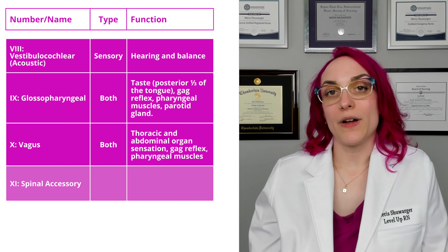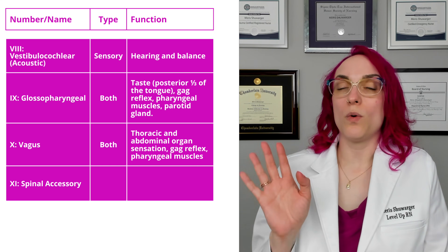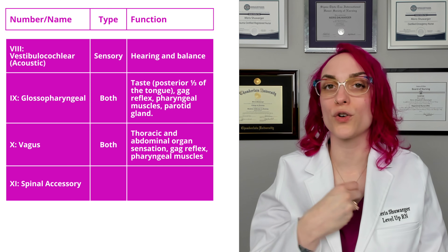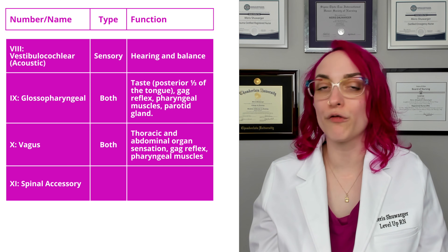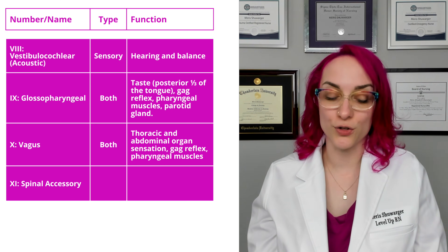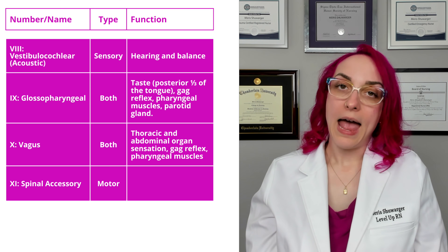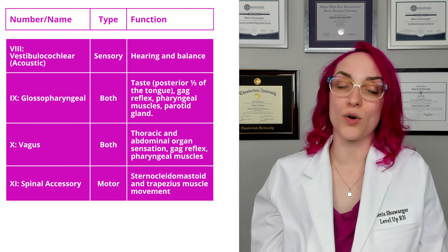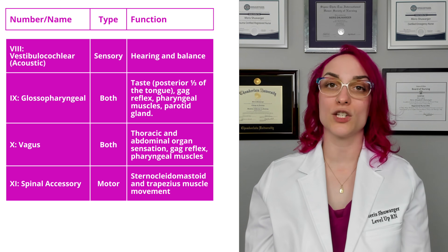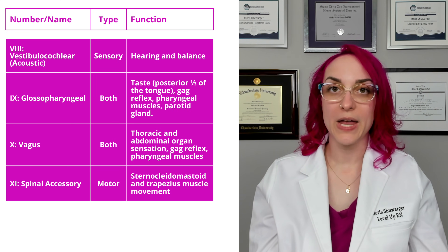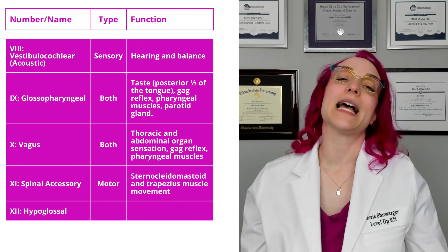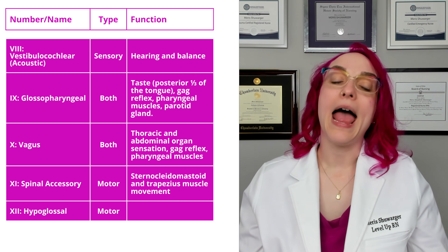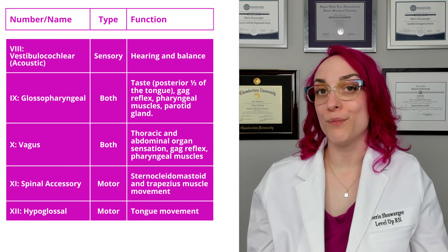Cranial nerve 11 is called spinal accessory — some places refer to it just as the accessory nerve, but the correct name is spinal accessory. This is a motor neuron only, and the function is sternocleidomastoid and trapezius muscle movements, which is why it can be assessed with a shoulder shrug. Cranial nerve 12 is hypoglossal — a motor neuron responsible for tongue movement.